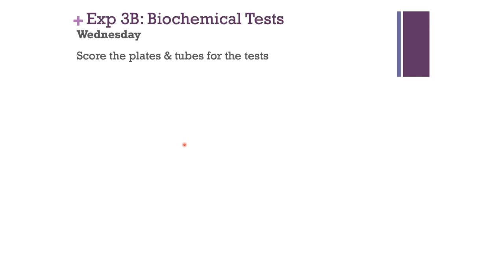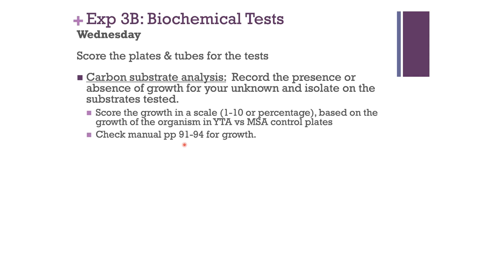On Wednesday, after setting all your plates, you're going to score them. For the carbon substrate analysis, record the presence or absence of growth in your unknown and your isolate, comparing to the YTA and MSA control plates. YTA is your rich media — everything should grow there; give it the maximum growth score, for example a 10 on a 1-to-10 scale. MSA is your minimal media with no carbon source — bacteria should have little to no growth, scoring a 0 or 1.